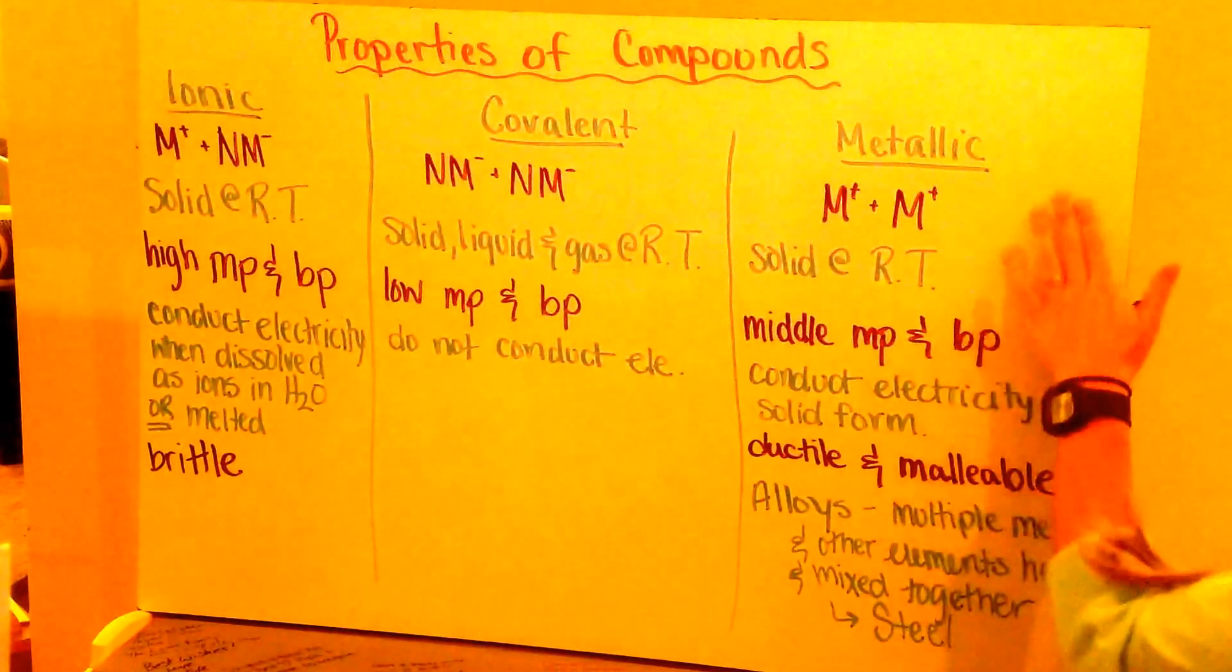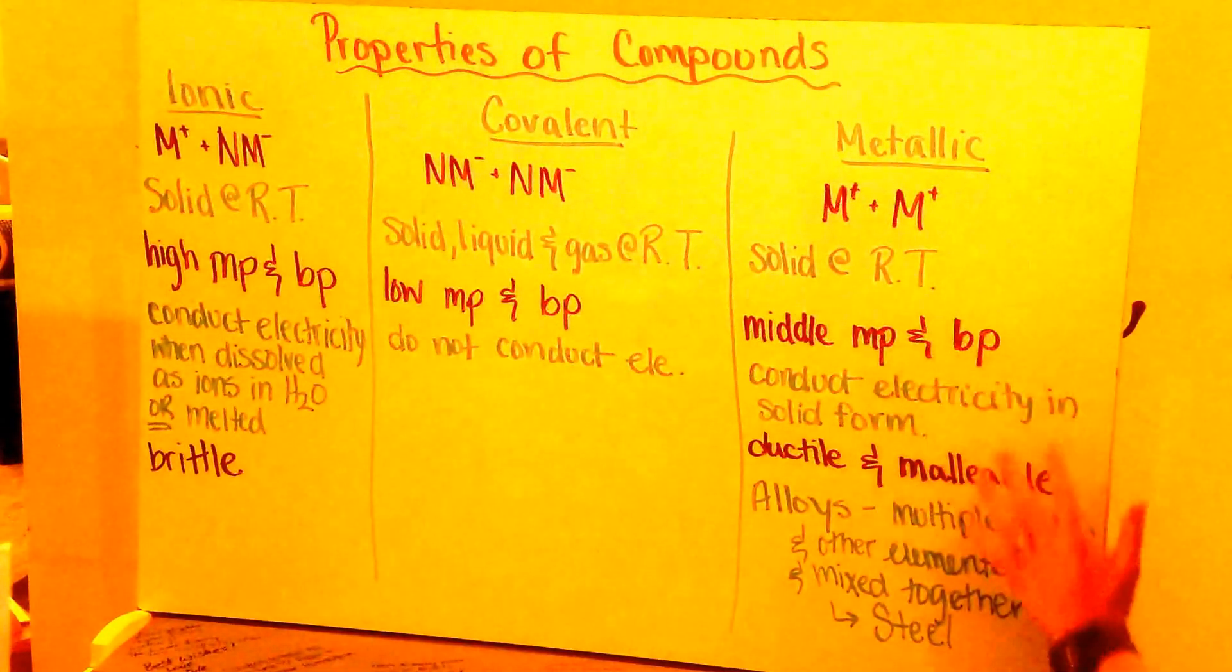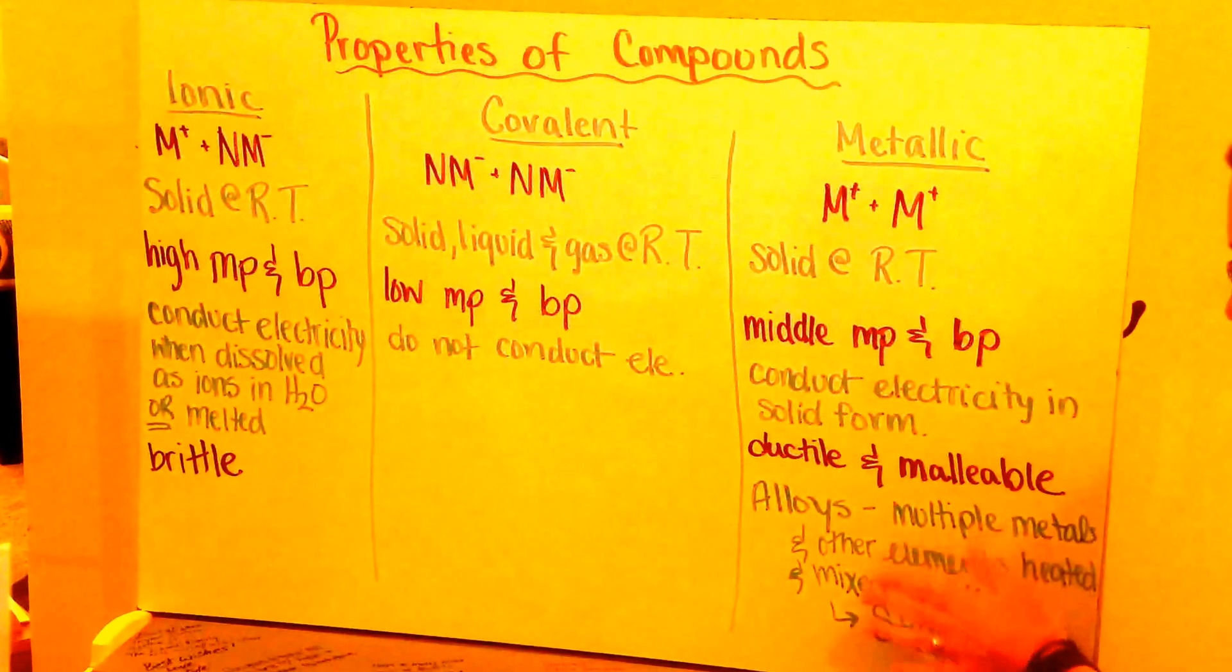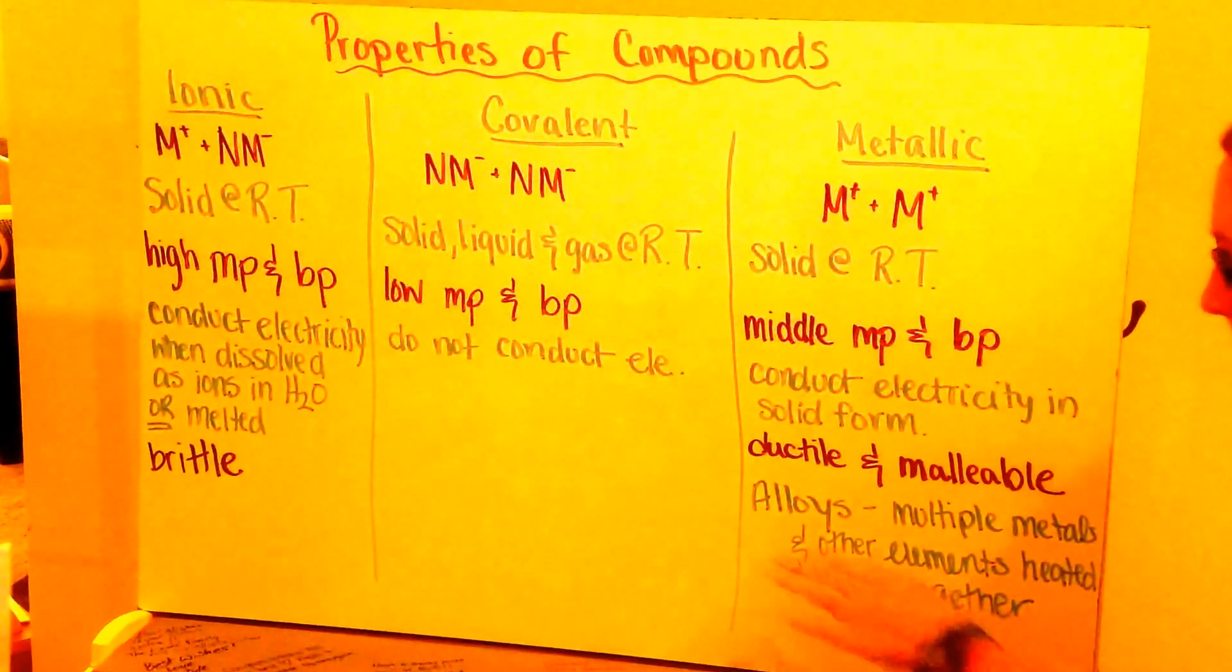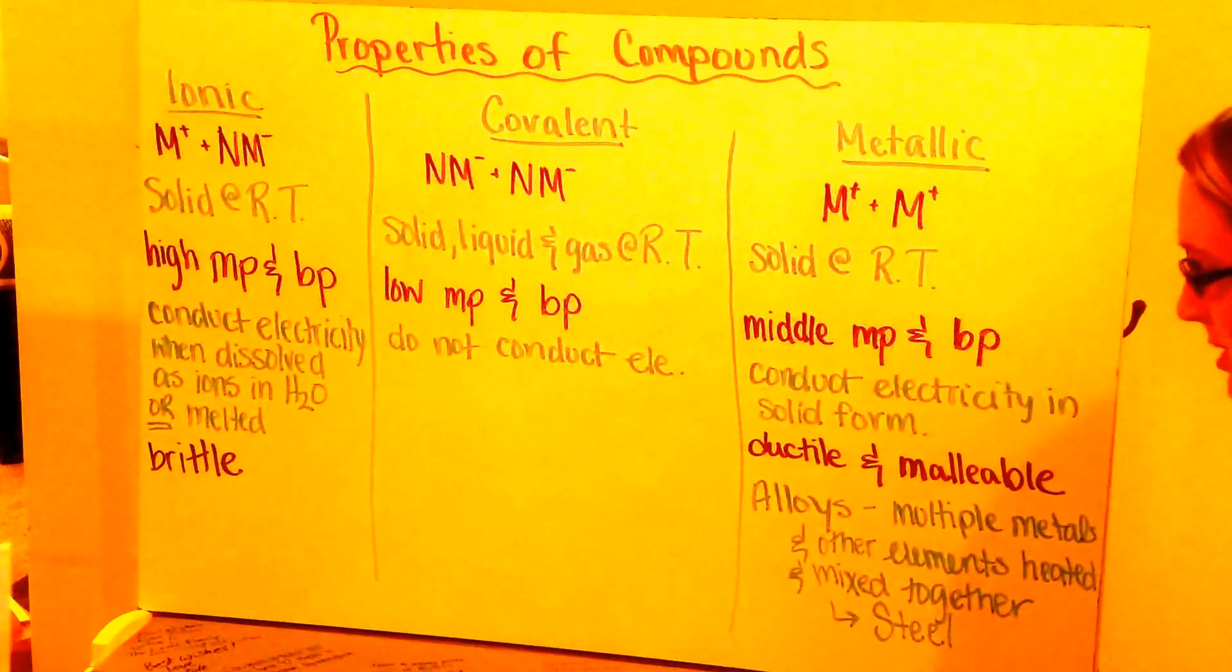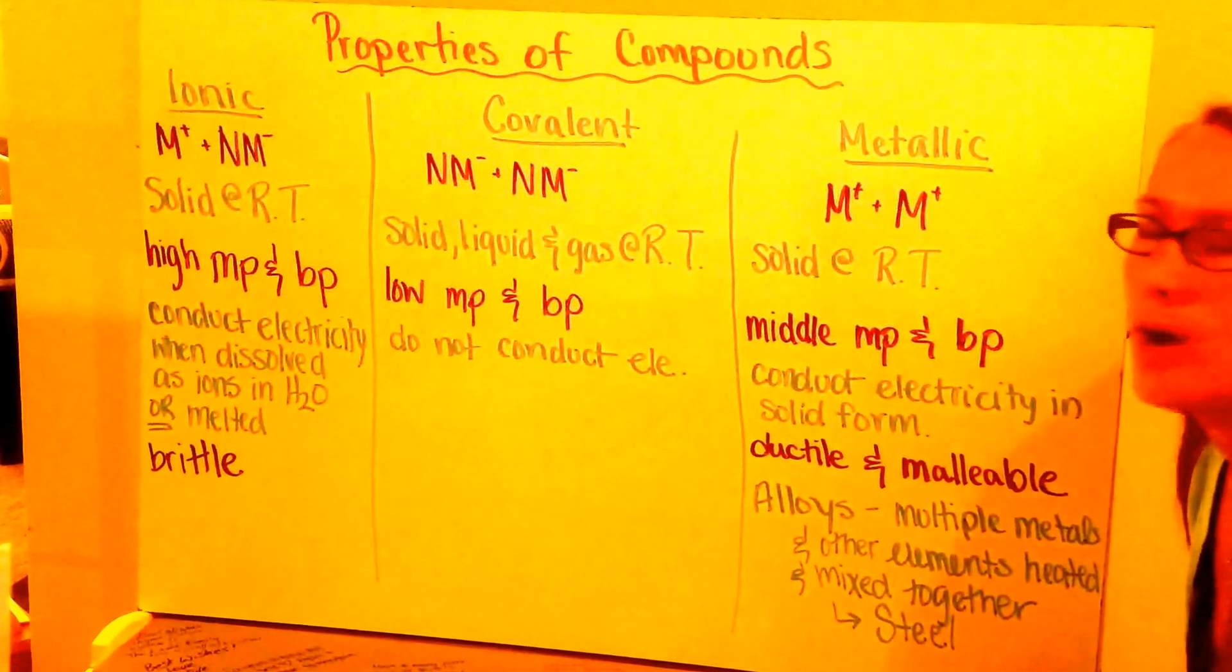One last thing is that metallic compounds, when they are heated up and multiple metals are mixed together in their molten forms, we can make alloys. Some examples of alloys are steel and bronze.